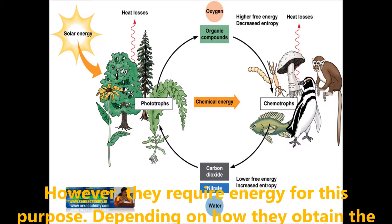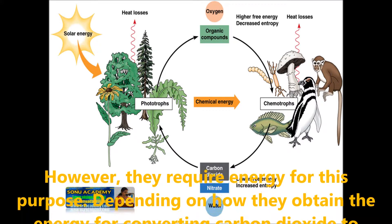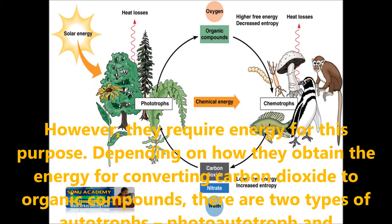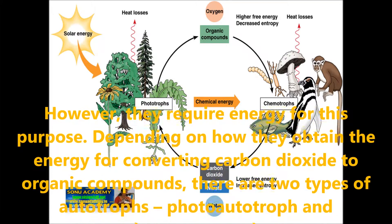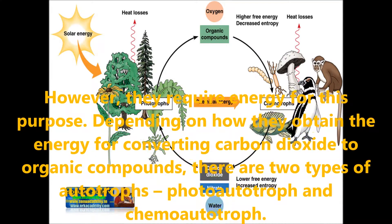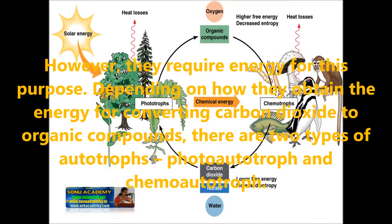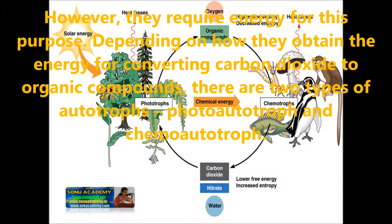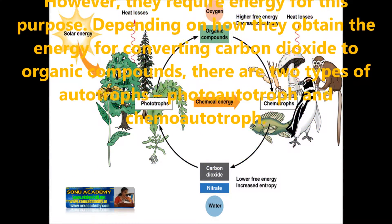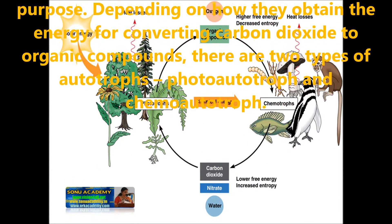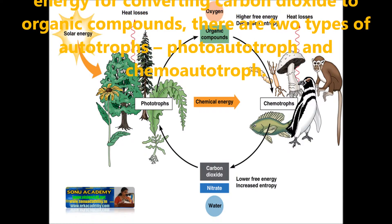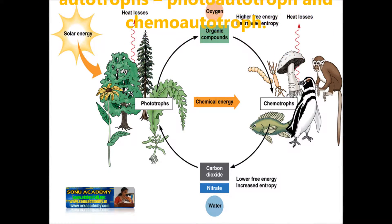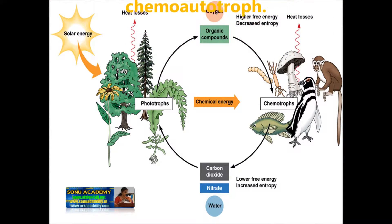However, they require energy for this process. Depending upon how they obtain the energy for converting carbon dioxide to organic compounds, there are two types of autotrophs, and they are called photoautotrophs and chemoautotrophs. Let us see what photoautotrophs and chemoautotrophs are.